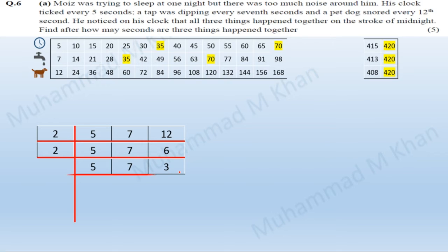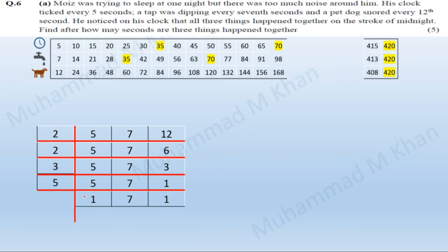Now none of the numbers are divisible by 2, so we use the next prime number, which is 3. Dividing 3 by 3 gives us 1, and we repeat 5 and 7 as they are not divisible by 3. Since no number is divisible by 3 anymore, we jump to the next prime number, 5. Dividing 5 by 5 gives 1, and we repeat 7. Finally, dividing 7 by 7 gives 1. The target is to get 1 under all of the numbers.